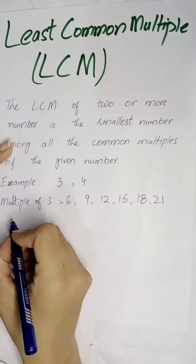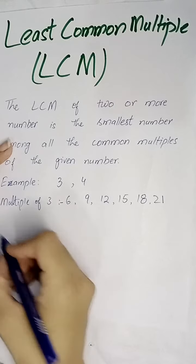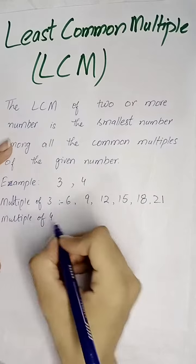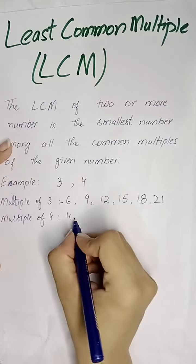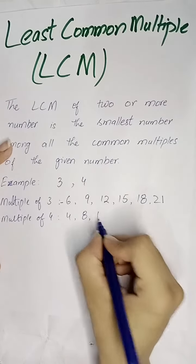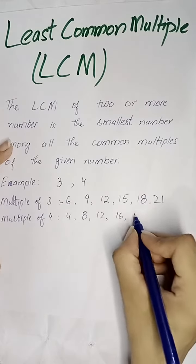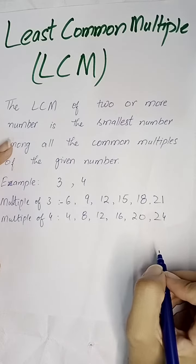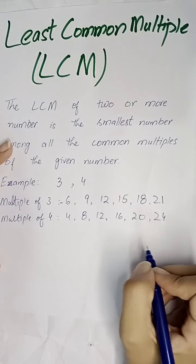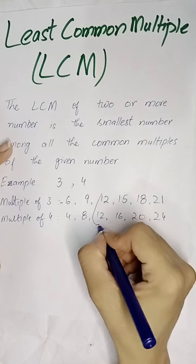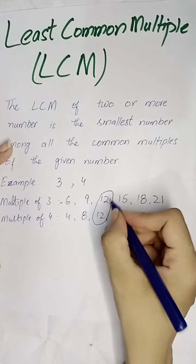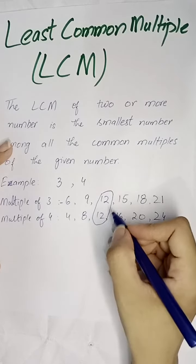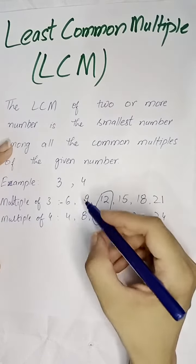Now write the multiples of 4: 4, 8, 12, 16, 20, 24. Now we have to find out which one is common.